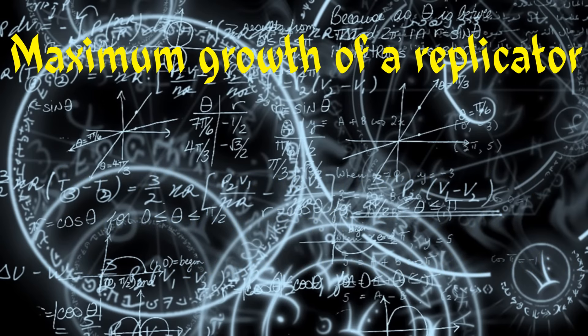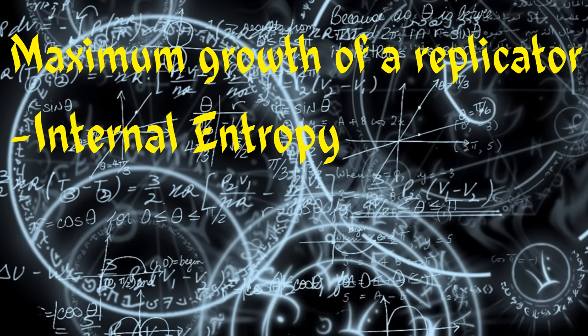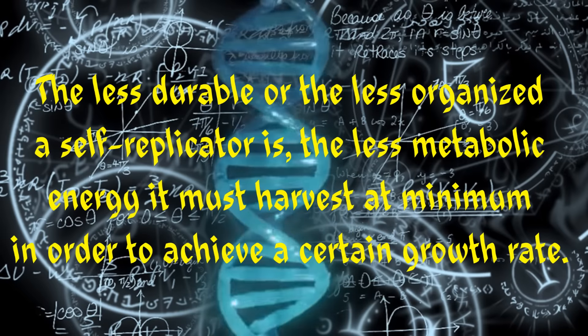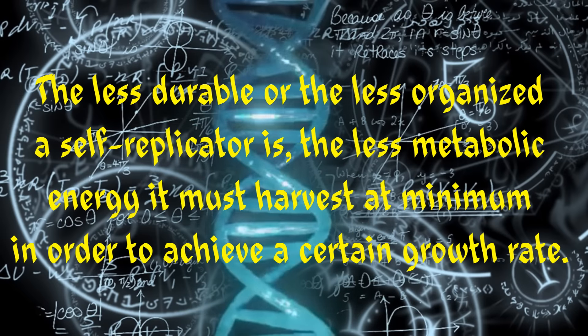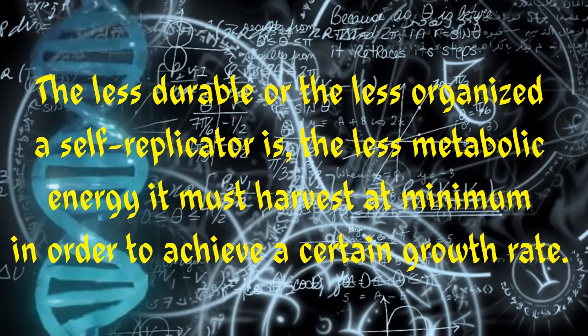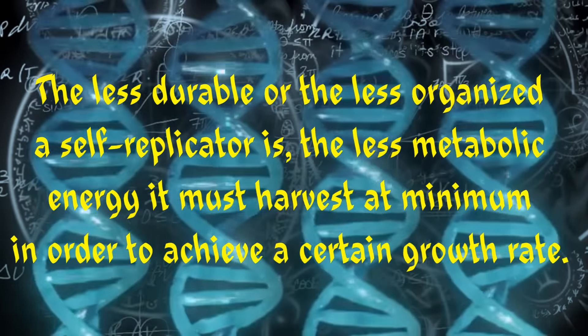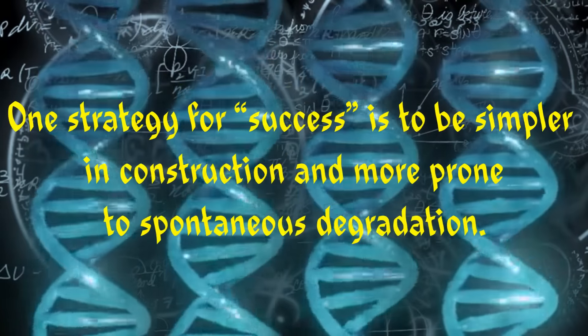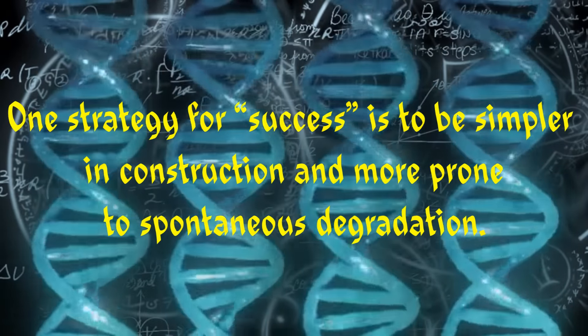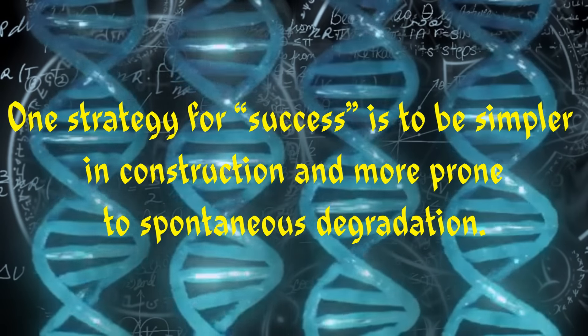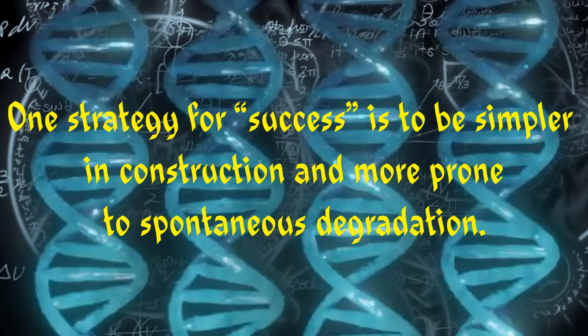The maximum net growth of a self-replicator is fixed by three things: its internal entropy, its durability, and the heat that is dissipated into the surrounding bath during the process of replication. The less durable or less organized a self-replicator is, all things being equal, the less metabolic energy it must harvest at minimum in order to achieve a certain growth rate. Thus, in a competition among self-replicators to dominate the population of the future, one strategy for success is to be simpler in construction and more prone to spontaneous degradation.